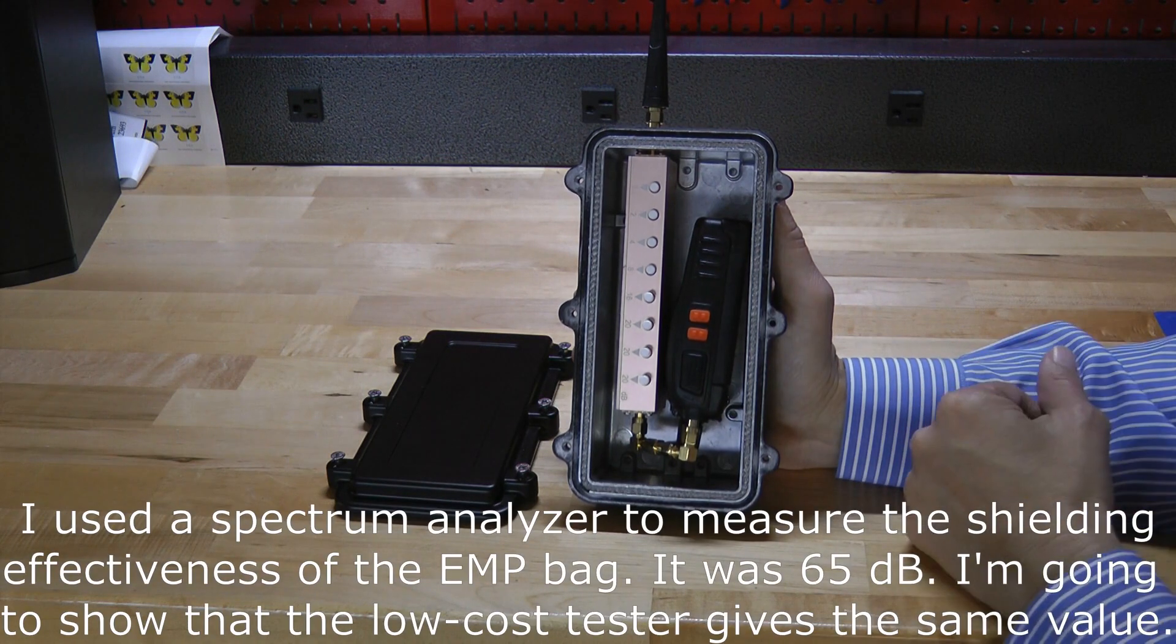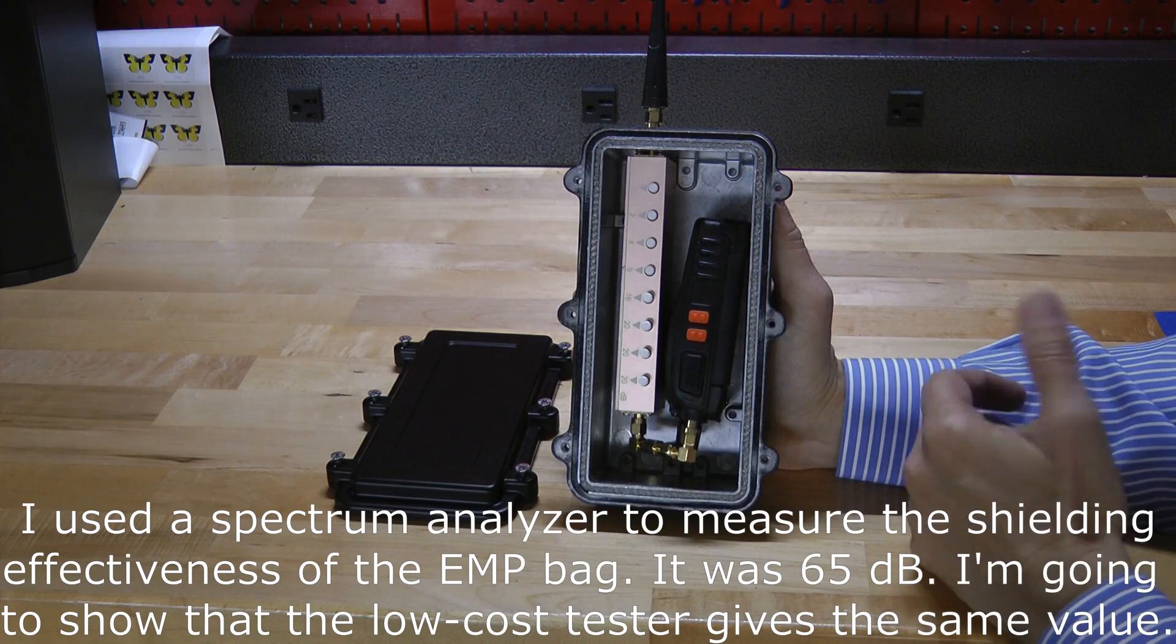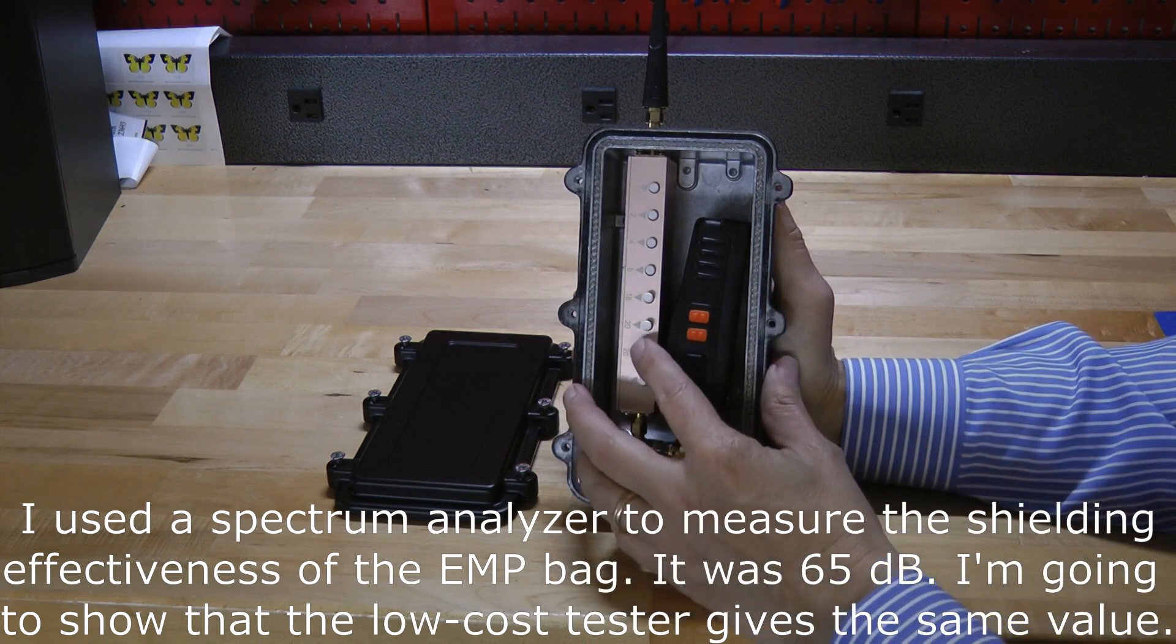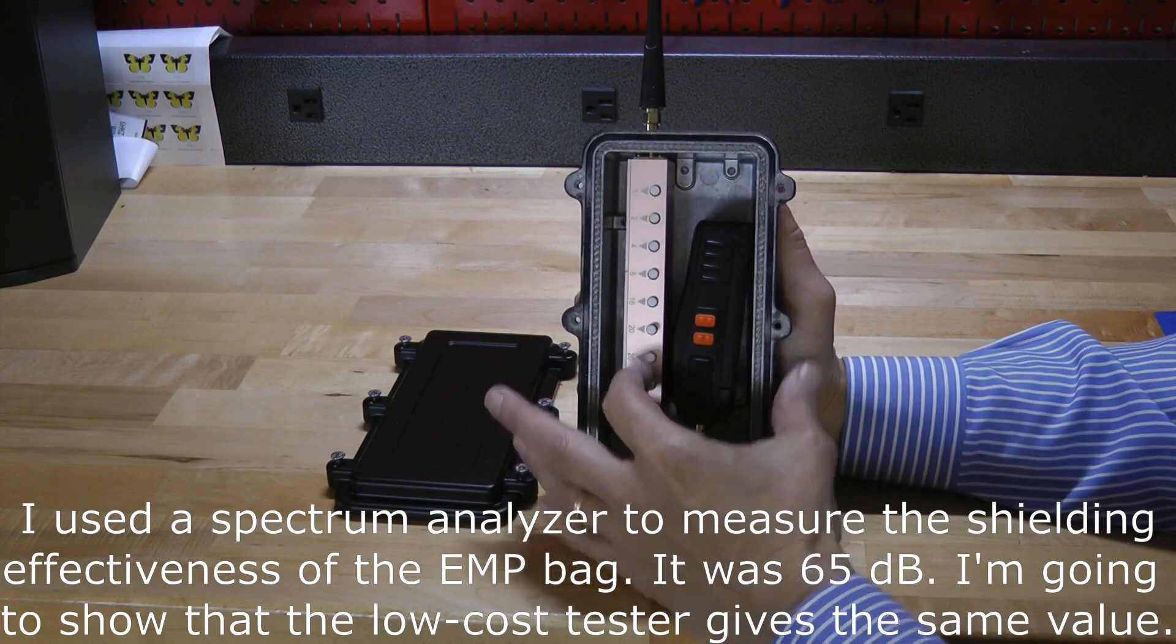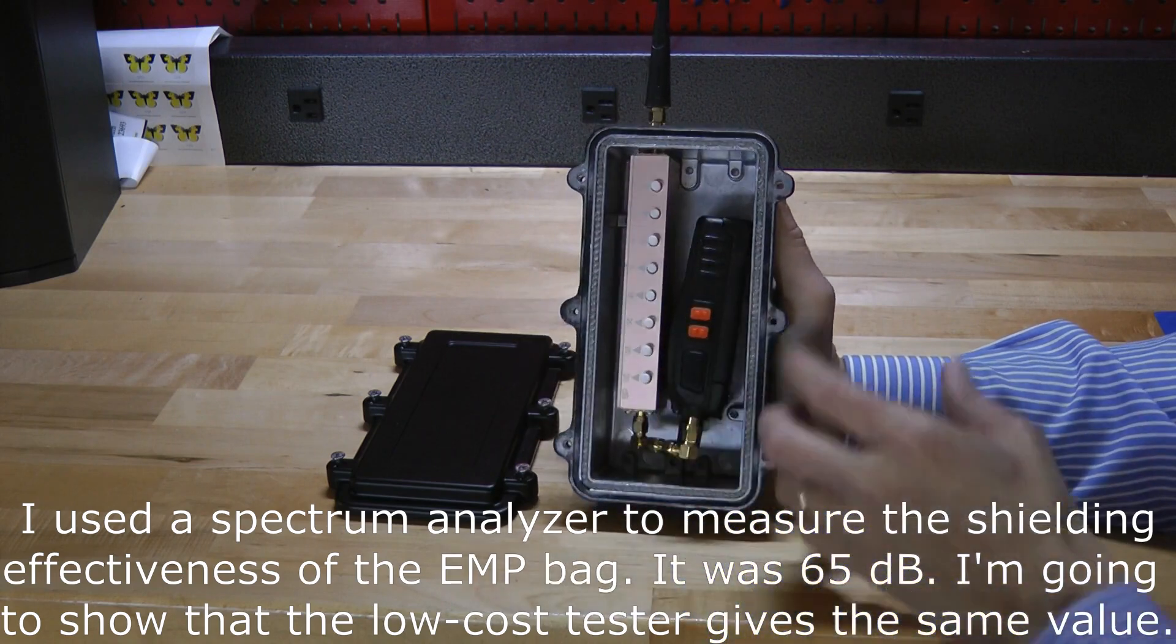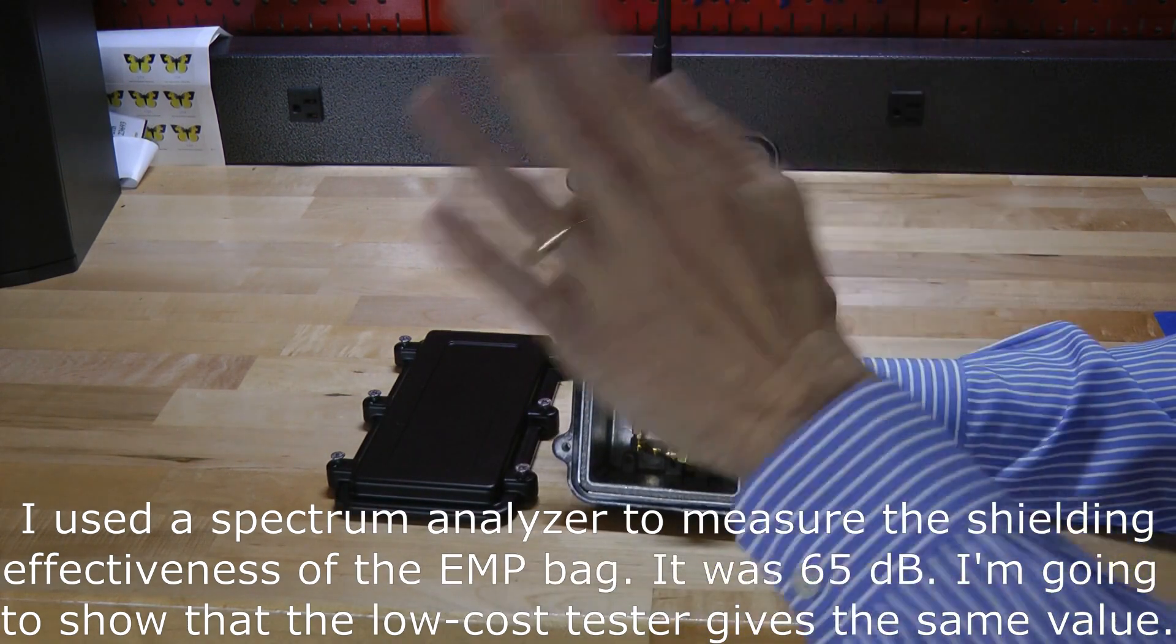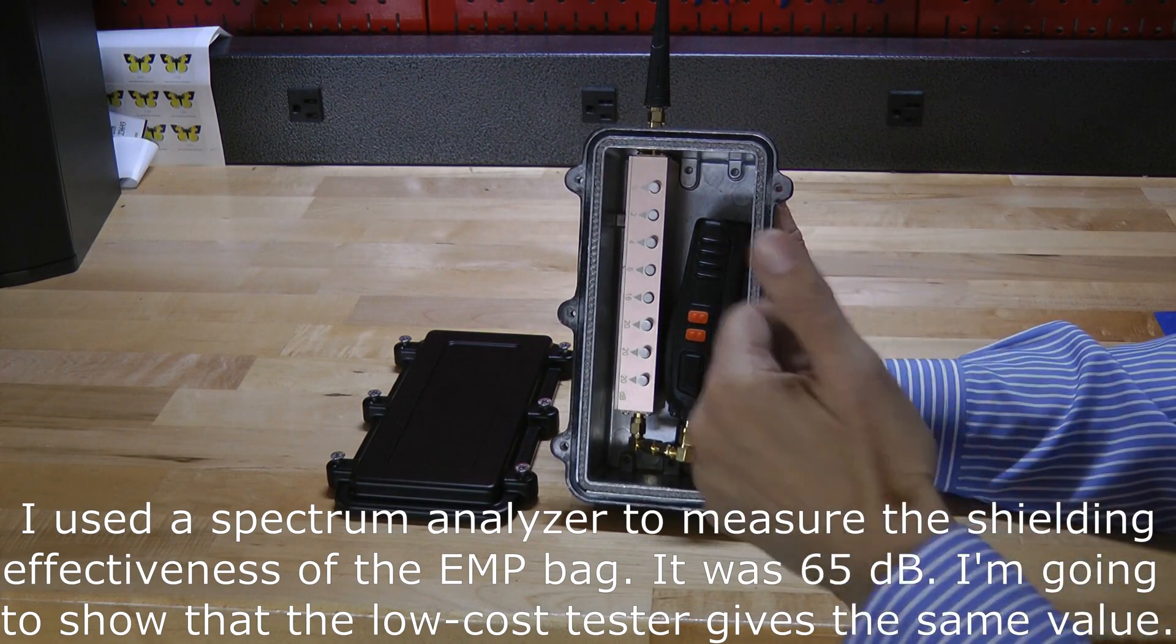So in our particular case, we know that the EMP bag has 65 dB of shielding. I verified that with my spectrum analyzer. So what I'm going to do is I'm going to take off 65 dB. So what I'll do is I'll remove 60, I'll remove a four and a one. Now I've got 65 dB removed. I'll button up the box. I'll stick it inside of our EMP bag, tighten up the bag, and see if I can turn on the radio.